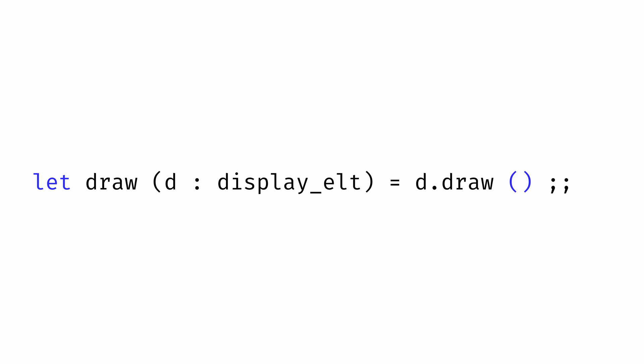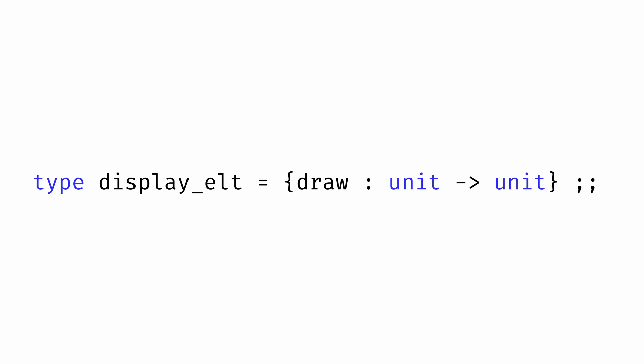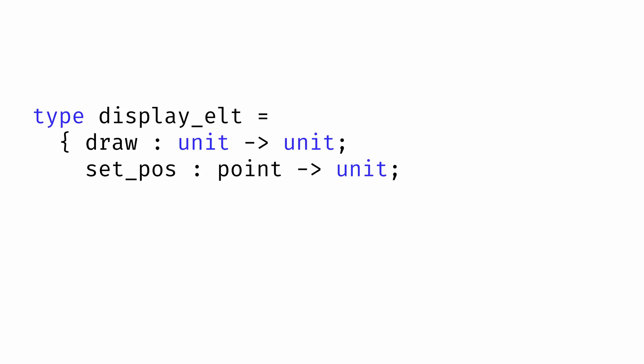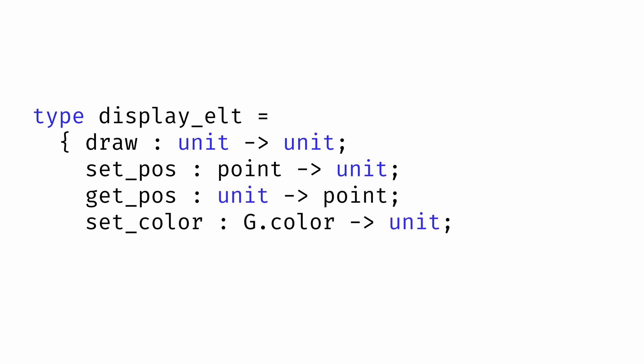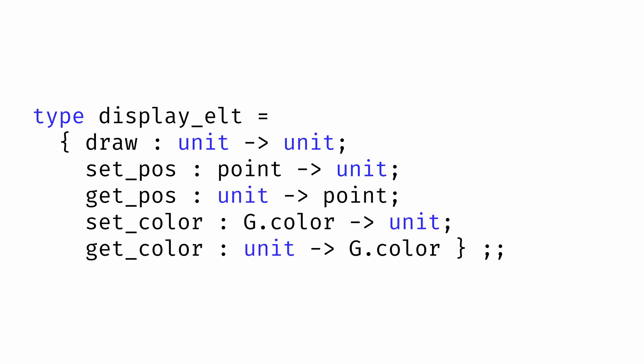We might think of these as very simple objects. All an object of this type is able to do is draw itself. We could give our display elements additional functionality. We might add functions for getting and setting the position of a display element, as well as functions for getting and setting the color of a display element. But in order for a display element to have a position and color that could be updated, we need some sort of mutable state that a display element has access to, some place where we can store the current position and color in such a way that they might be changed later.